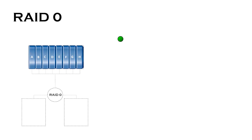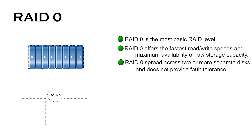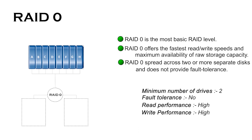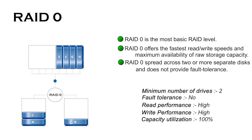RAID 0 is the most basic RAID level. It offers the fastest read and write speeds and maximum availability of raw storage capacity. RAID 0 does not duplicate data, but it is actually spread or striped across two or more separate disks. For example, in a two-disk array, the data is split evenly across the two disks, and it will double your speed.